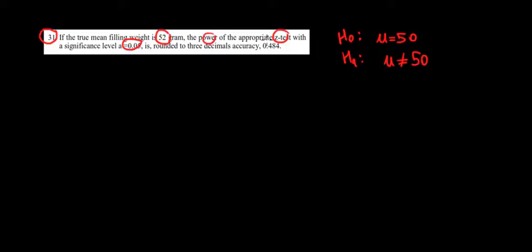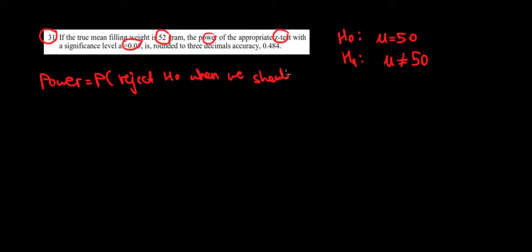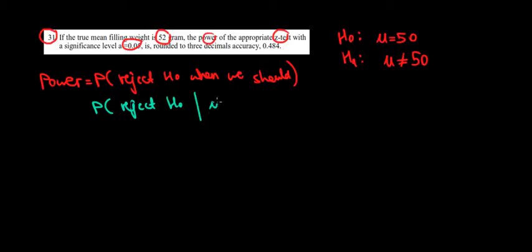Before going any further, let's define what the power is. The power is equal to the probability of rejecting the null hypothesis when we should. In this case, we would like to reject the null hypothesis given that the actual mean of the population is 52 grams. So we're looking for the probability of rejecting the null hypothesis given that the actual mean is equal to 52 grams.